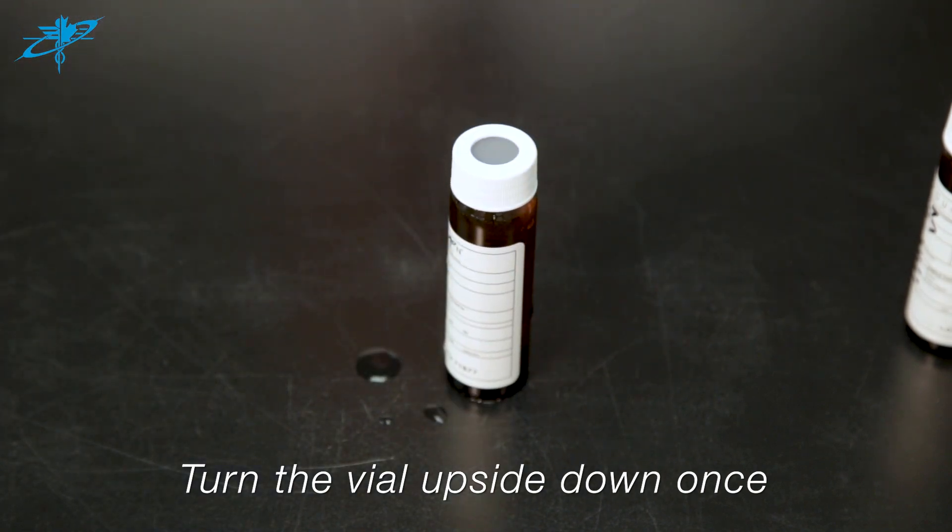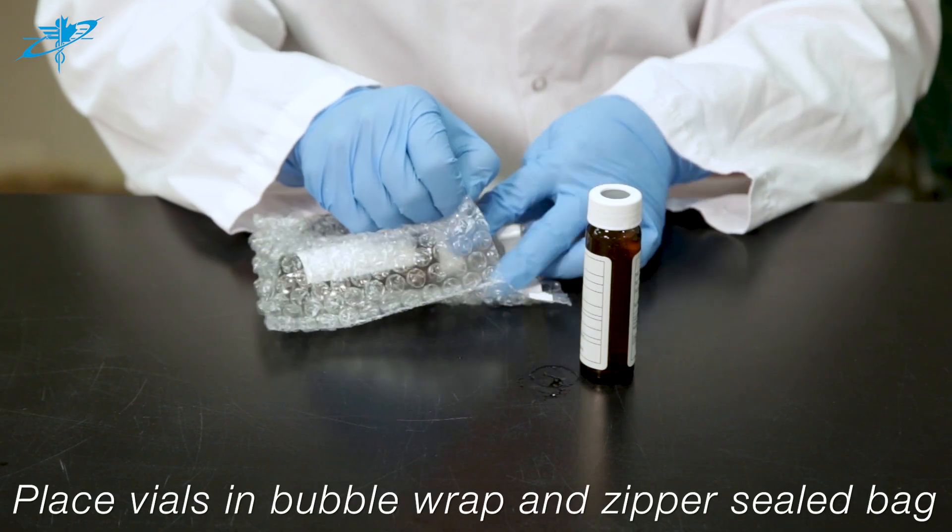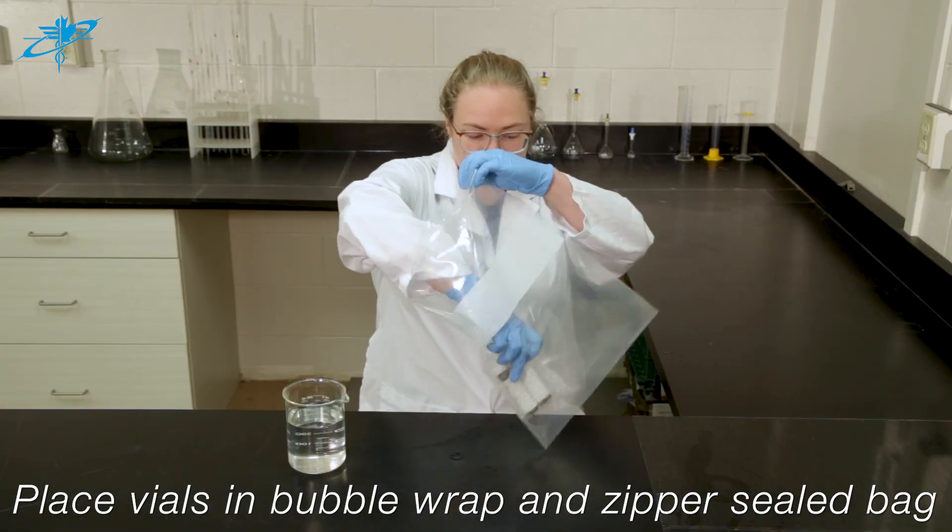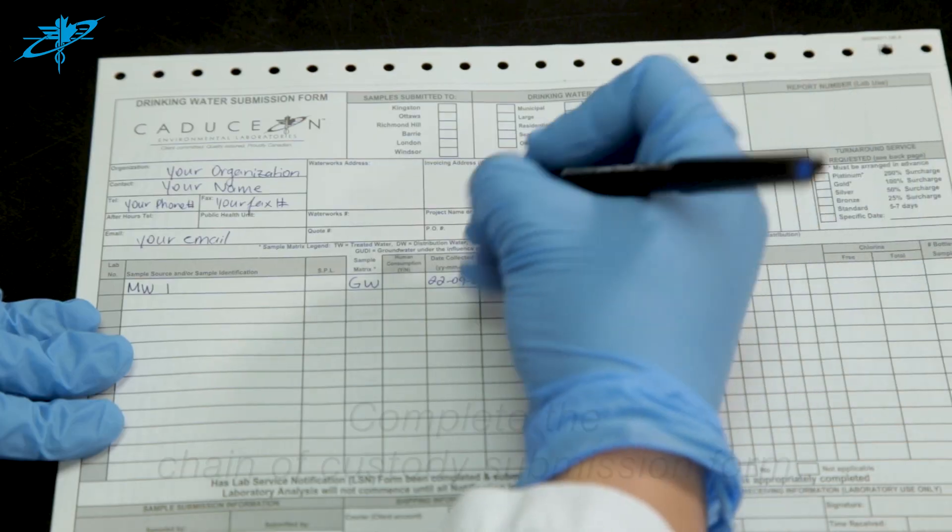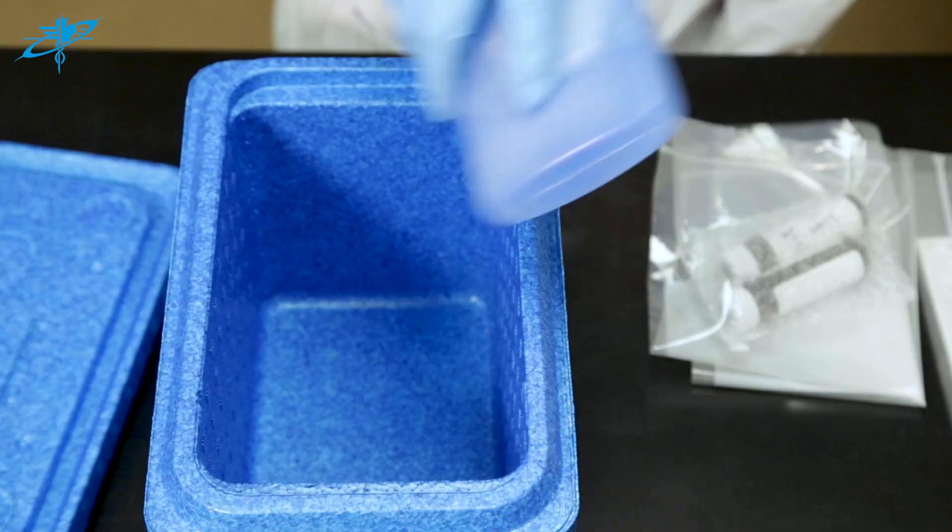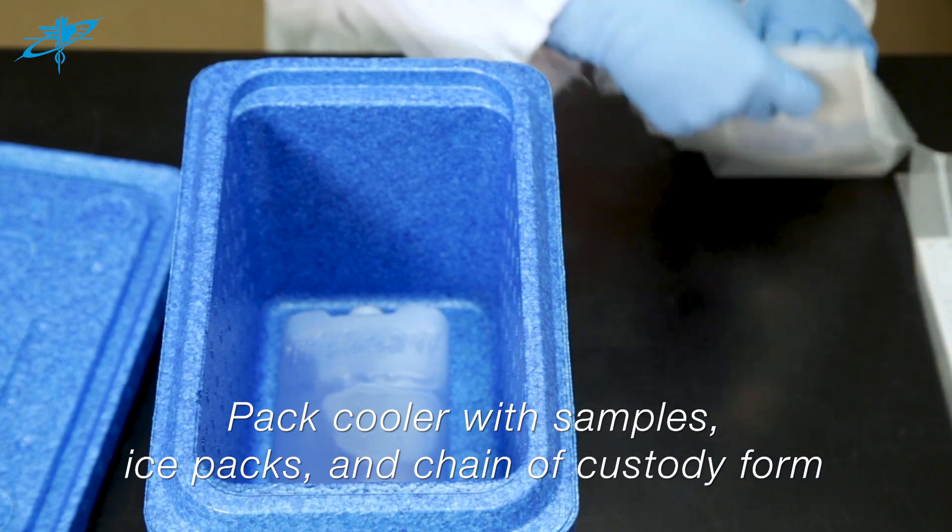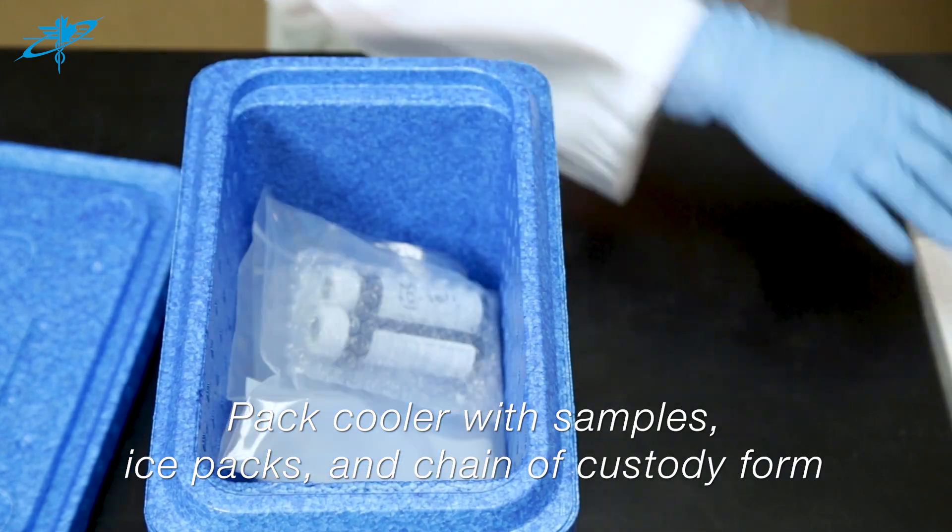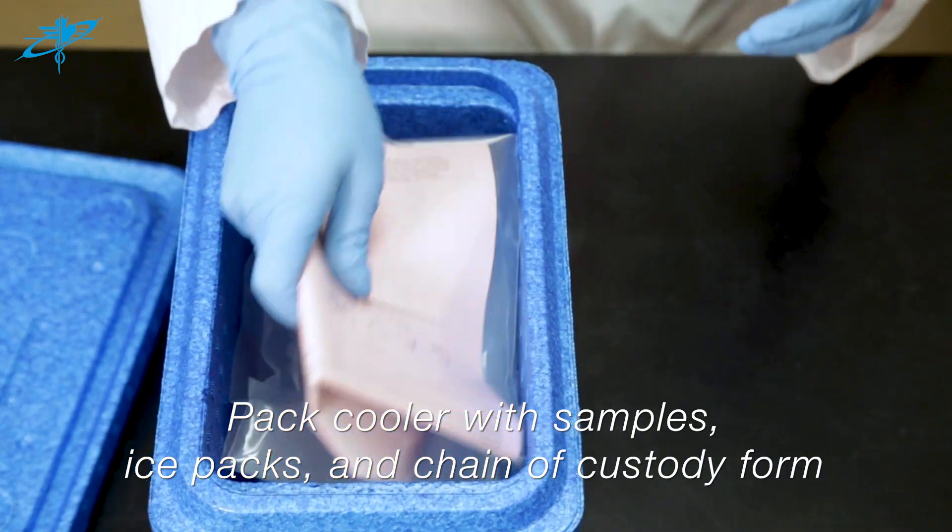Place the vials into a bubble wrap bag and then into a zipper seal bag. Complete the chain of custody submission form in its entirety. Place the sample into a cooler with ice packs. Include your chain of custody submission form with your sample for transportation to the lab.